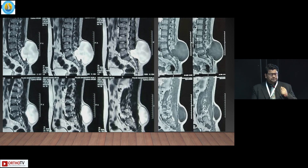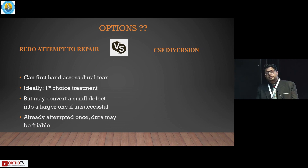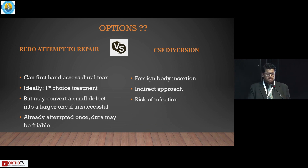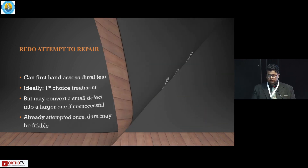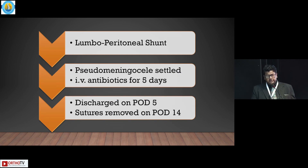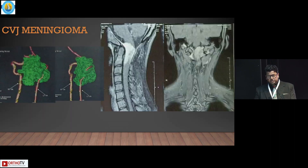How are you going to treat this? Are you going in and doing a redo of the dural tear when it has already been attempted twice? I was not sure I could do a better job than the previous surgeon. The dura might be friable and might not hold sutures. So what I did for this patient was CSF diversion — a last resort. I placed a lumboperitoneal shunt in this patient. The problem is it is a foreign body with a risk of infection. Fortunately, the pseudomeningocele settled down completely, and I was able to remove the lumboperitoneal shunt after 6 weeks — essentially 6 weeks of internal drainage, and the patient was doing well.